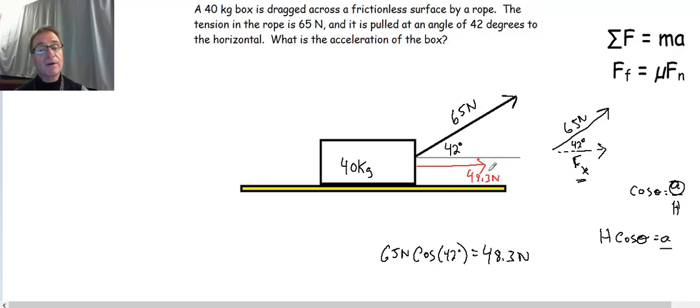Are there any other forces in the horizontal direction or the x direction on our block? The answer is no. There's no friction, there's no other forces. So if I write my equation now, the sum of the forces in the x direction is going to be 48.3 Newtons. That's the only force there is.